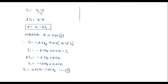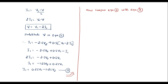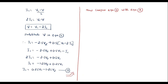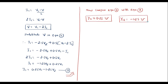Let me continue here. Now compare equation 3 with equation A. Equation A is: I1 is equal to Y11·V1 plus Y12·V2. The coefficient of V1 is Y11 and the coefficient of V2 is Y12. Therefore Y11 is equal to 0.25 mho (unit of admittance) and Y12 is equal to minus 1.25 mho. Now we will try to calculate the next two parameters, Y21 and Y22.